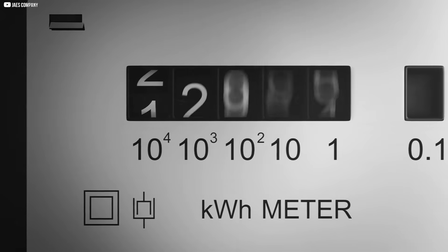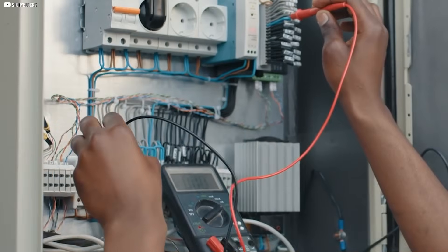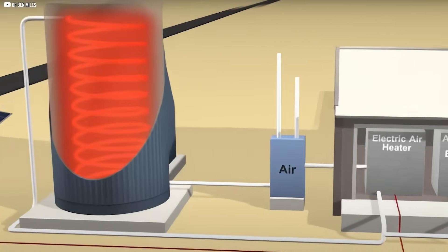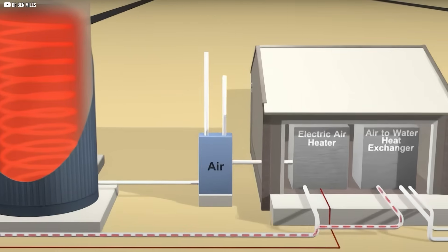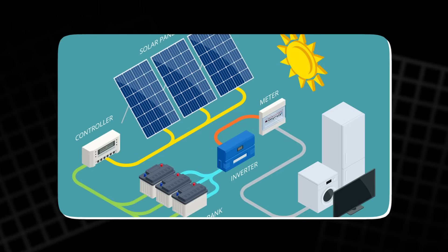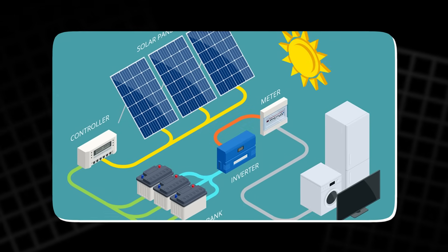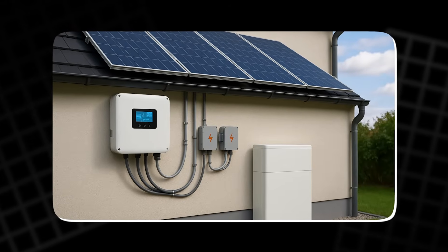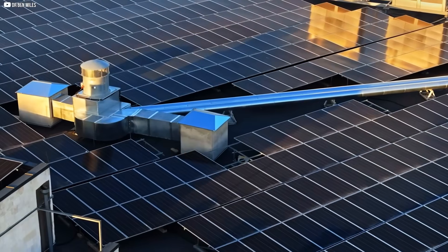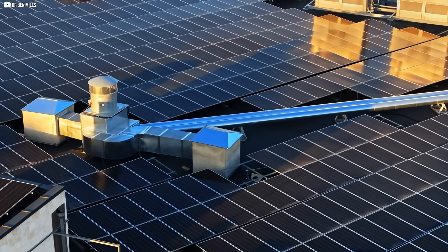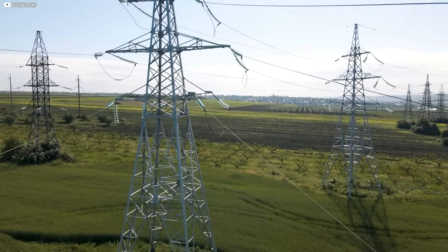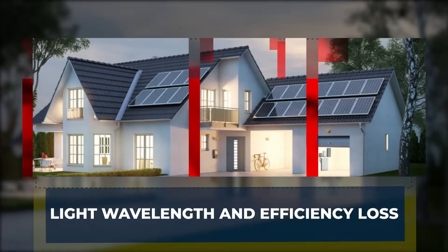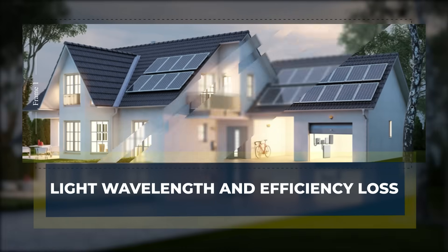That's why systems use a charge controller. It acts like a traffic cop for electricity, regulating voltage, preventing overcharge, and stopping power from flowing backward into the panels at night. For homes connected to the grid, the system can switch seamlessly between solar, battery, and grid power. Some setups even let you sell excess electricity back to the grid, offsetting your energy bills through a process called net metering.